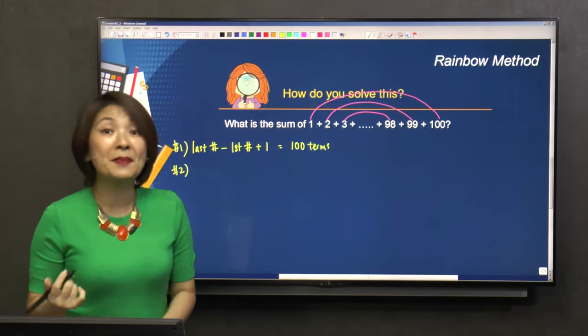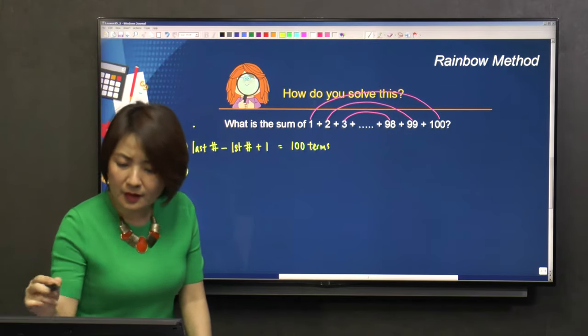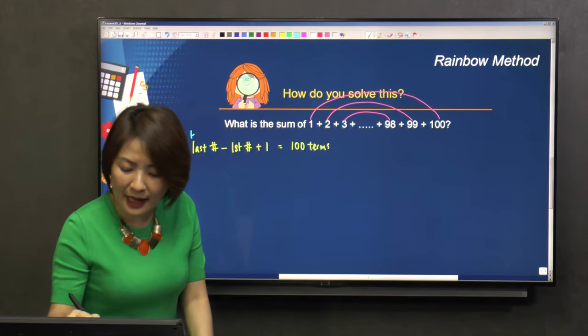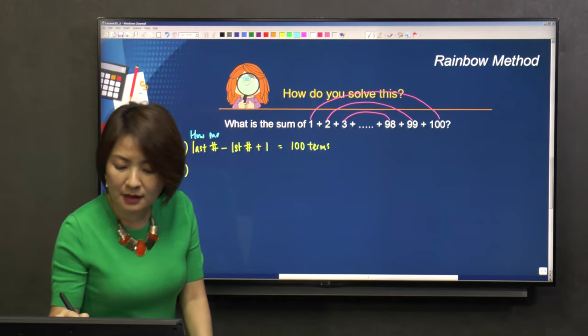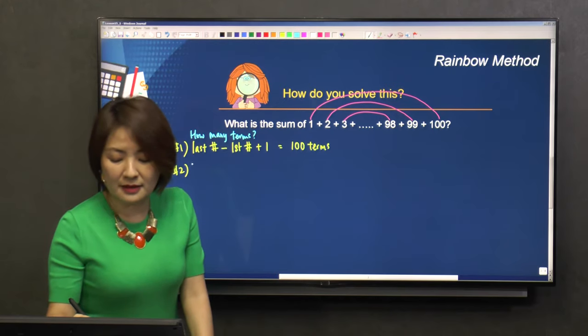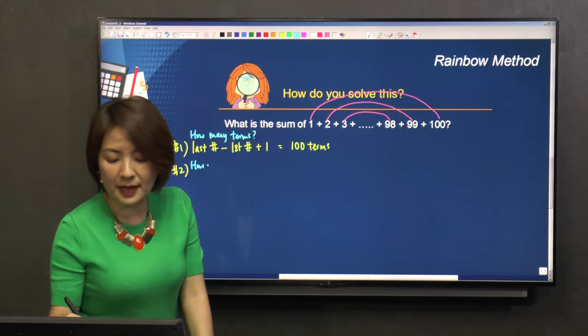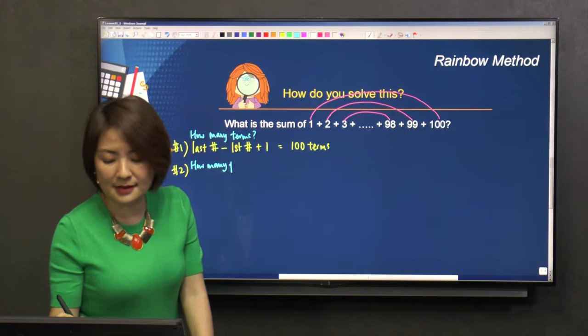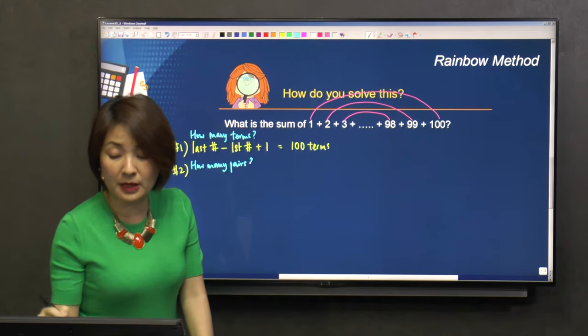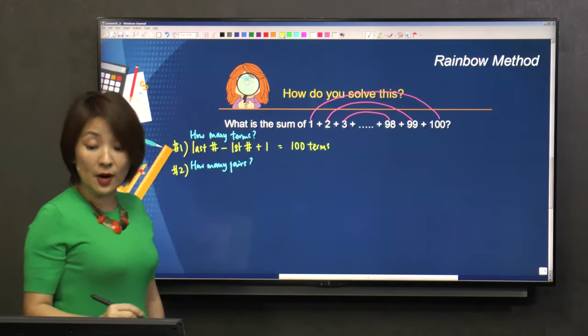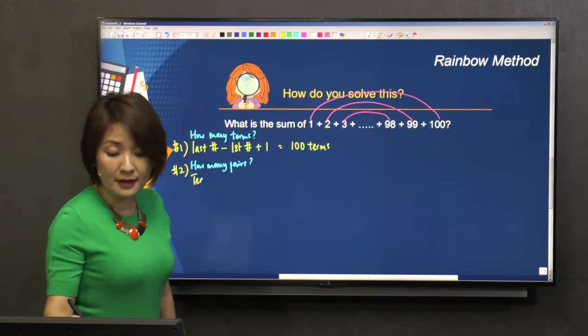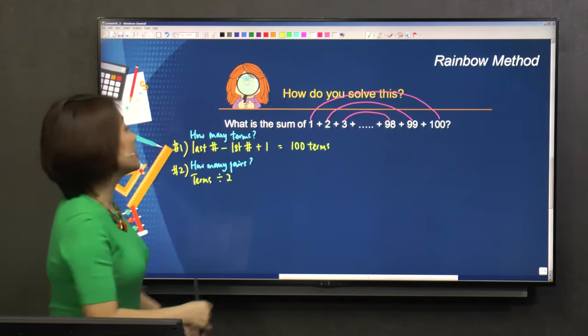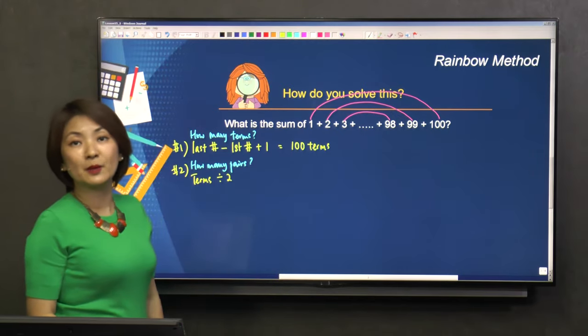How many pairs are there? So how many terms? How many pairs? How do you find how many pairs? You take the terms and divide by 2, right? Because how many terms make 1 pair?